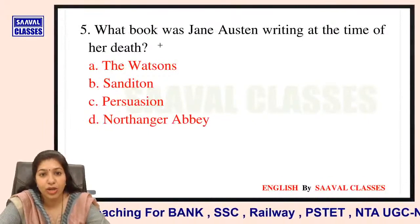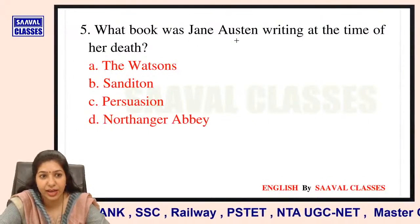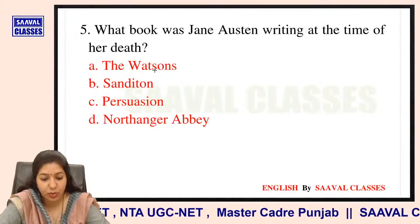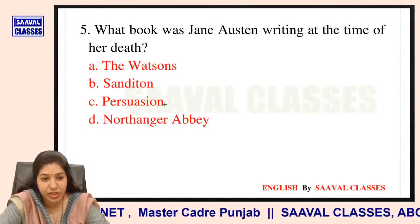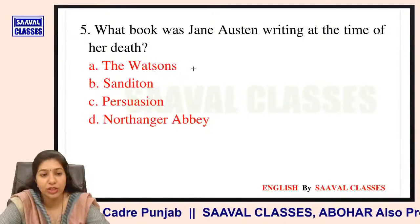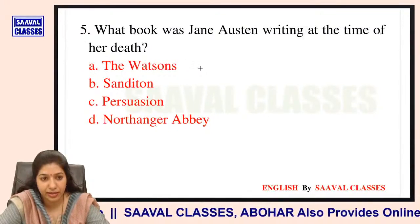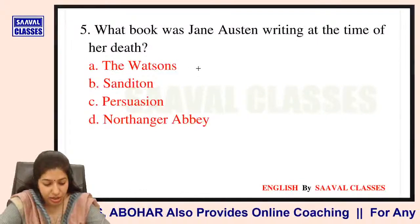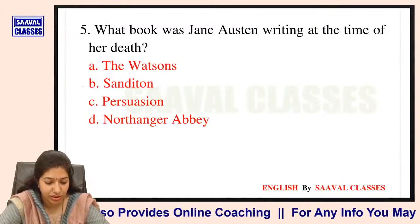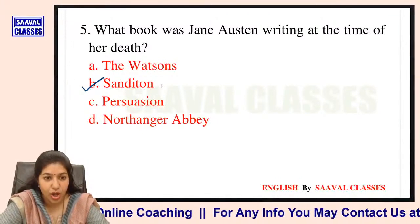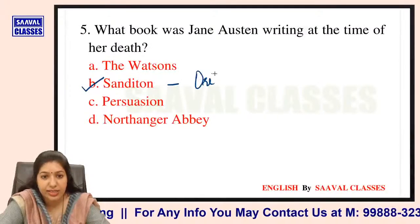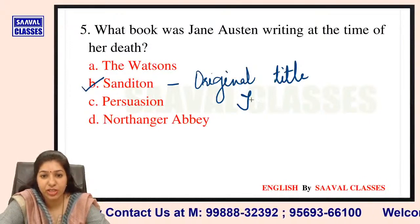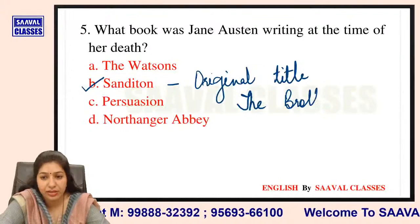Question number 5: What book was Jane Austen writing at the time of her death? Options are The Watsons, Sanditon, Persuasion, ya Northanger Abbey? She was writing Sanditon. Aur Sanditon ka jo original title tha, woh The Brothers tha.